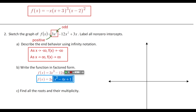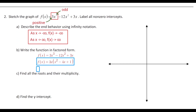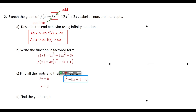The quadratic x² − 4x + 1 doesn't factor nicely, so we'll need to use the quadratic formula to find the other two zeros. Setting each factor equal to zero: from 3x, we get x = 0, which has multiplicity 1. For x² − 4x + 1 = 0, since it's not factorable, we apply the quadratic formula.